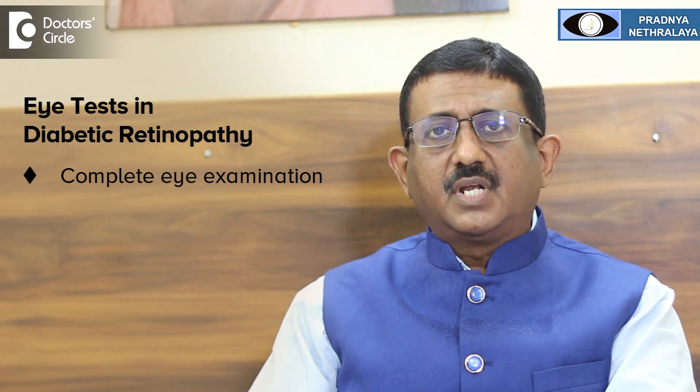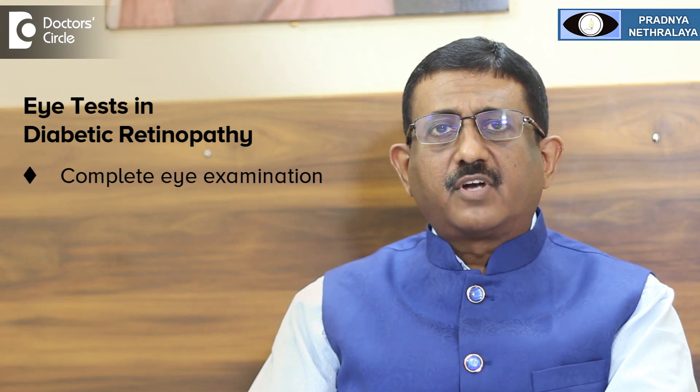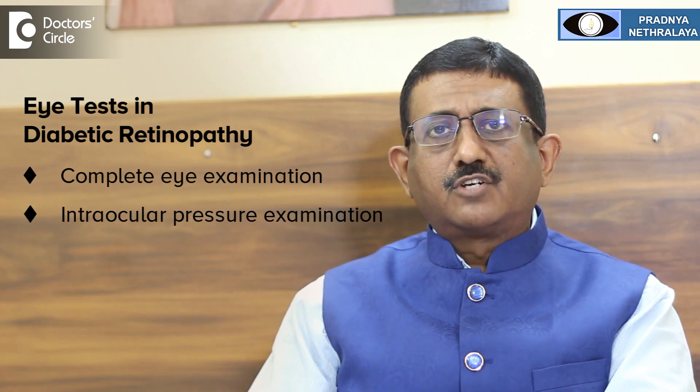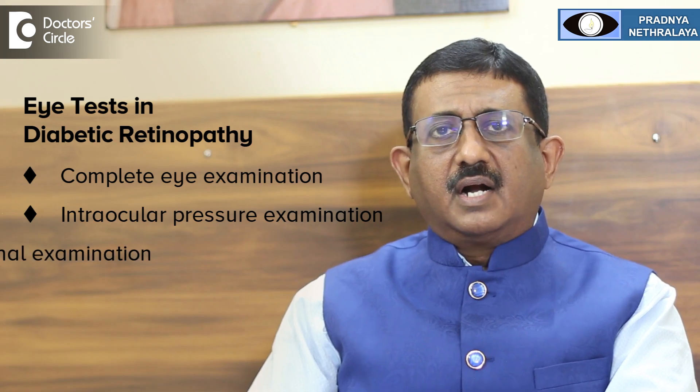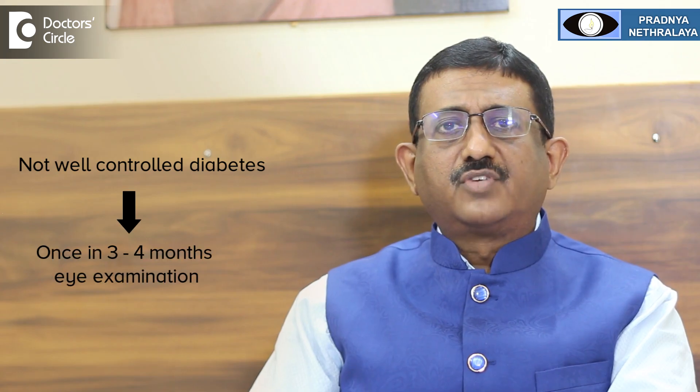The take-home message: all persons with diabetes should have a complete eye examination — not just a glass power checkup — by an ophthalmologist, which should include intraocular pressure measurement and a dilated retinal examination. How frequently this should be done depends on the status of your diabetes. If your diabetes is well controlled, once in six months to once a year is enough. If it is not well controlled, once every three to four months is essential.